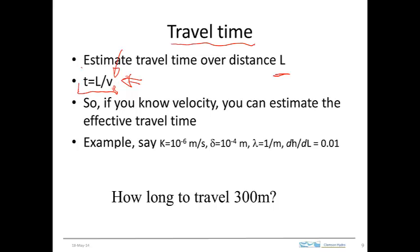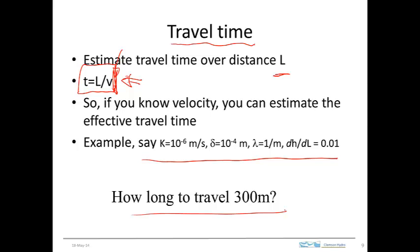We might think of this travel time as a lower limit for the time it takes to travel from one point to another. Nevertheless, this gives us a conservative estimate. If we're concerned about whether contaminants might have arrived at a certain point, this gives a conservative estimate as to whether that might actually happen. Let's do an example: given these characteristics, how long would it take for water to travel 300 meters? Go ahead and try working that out.